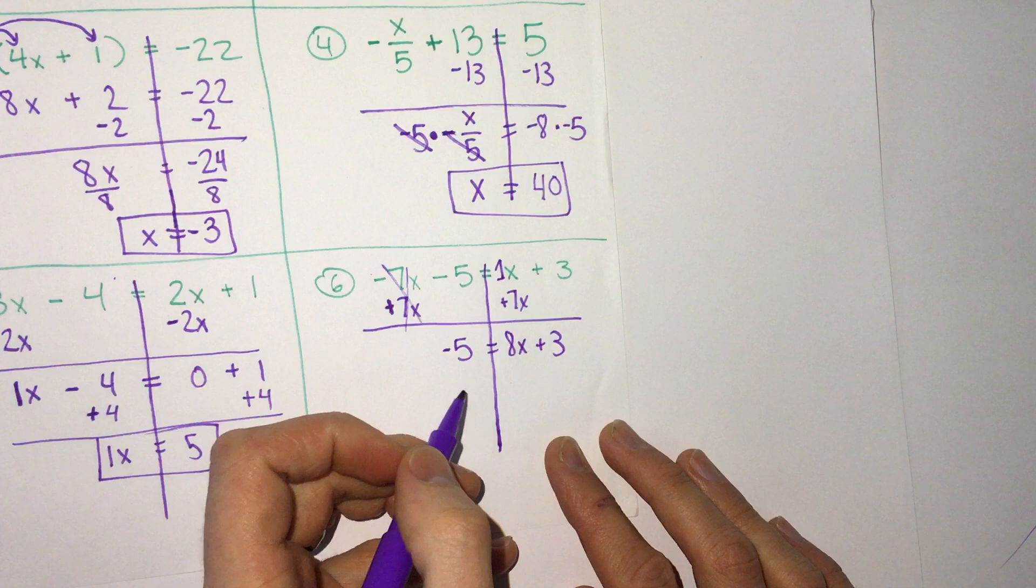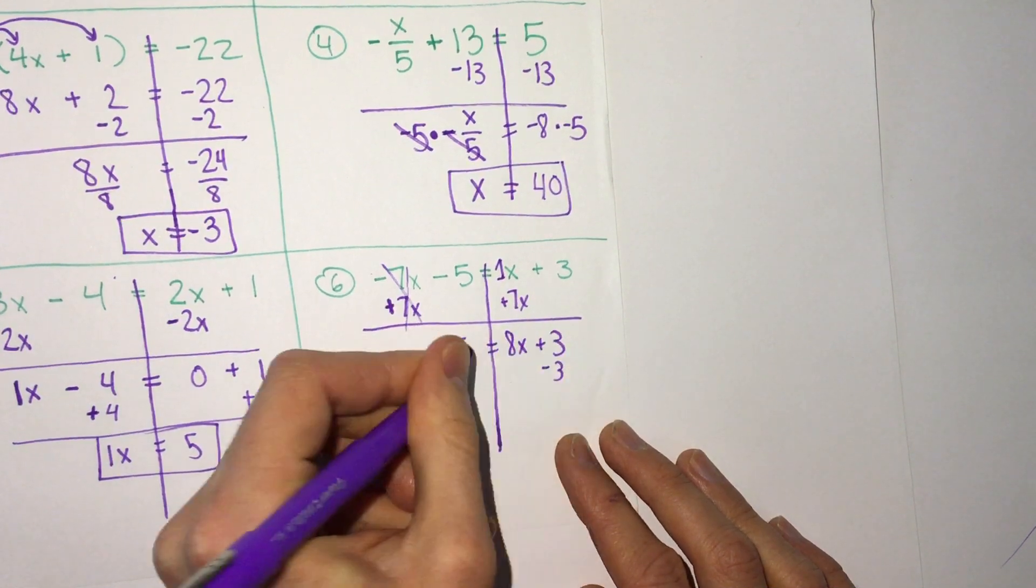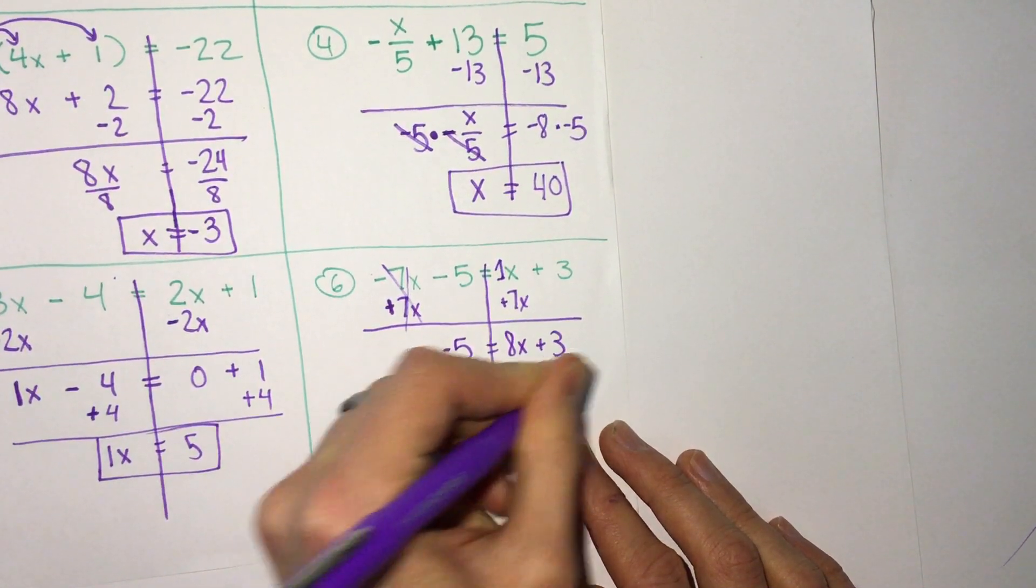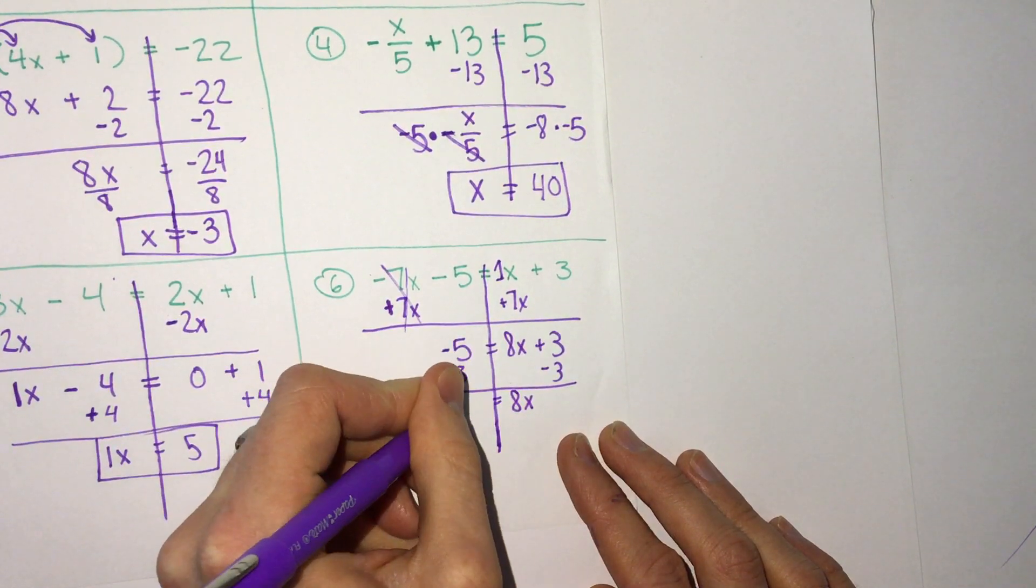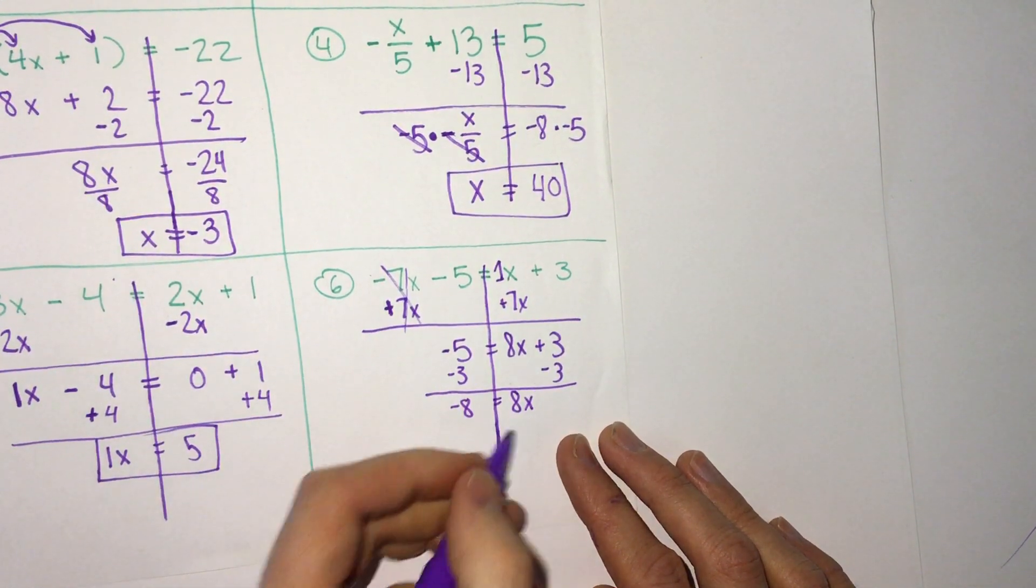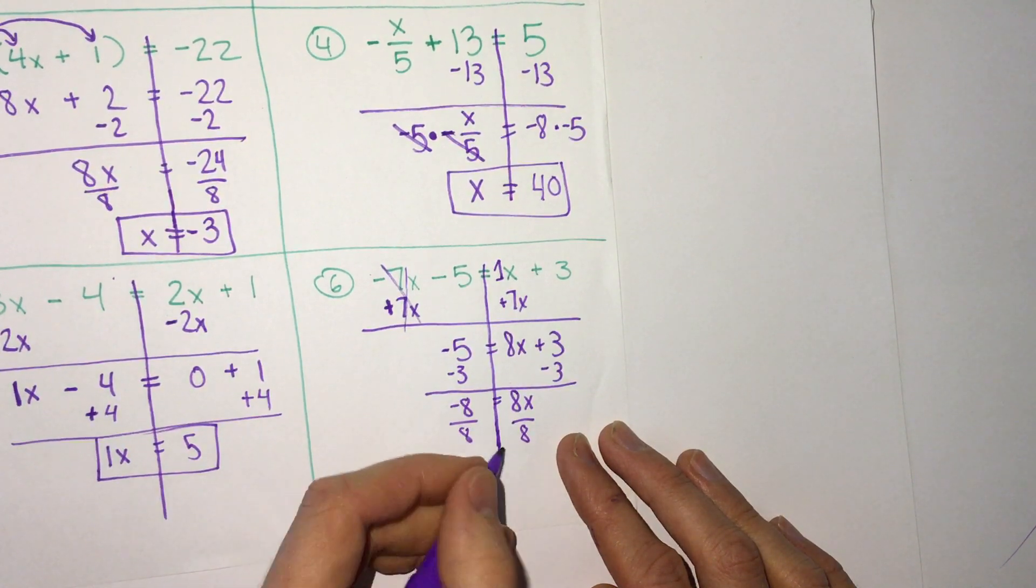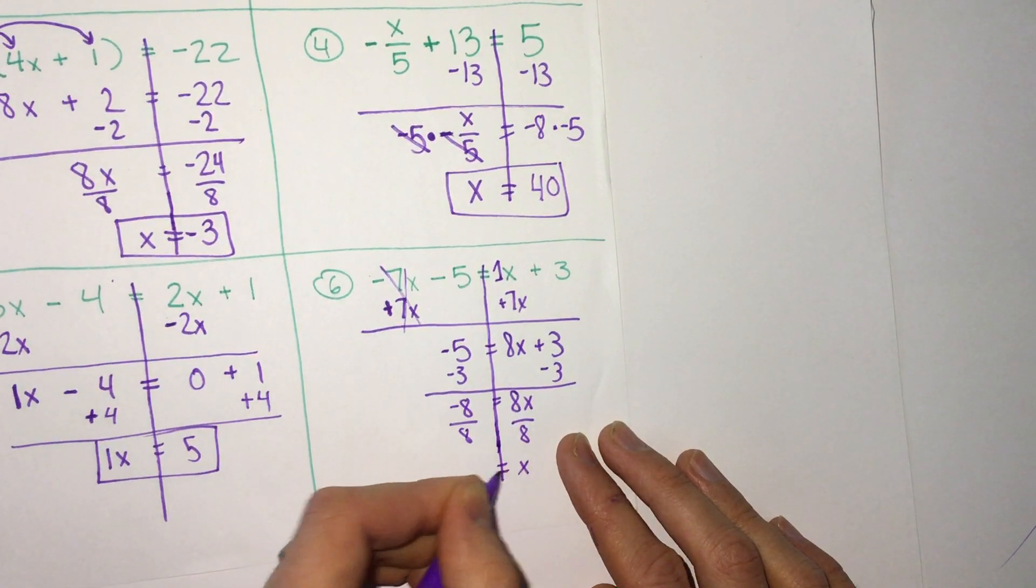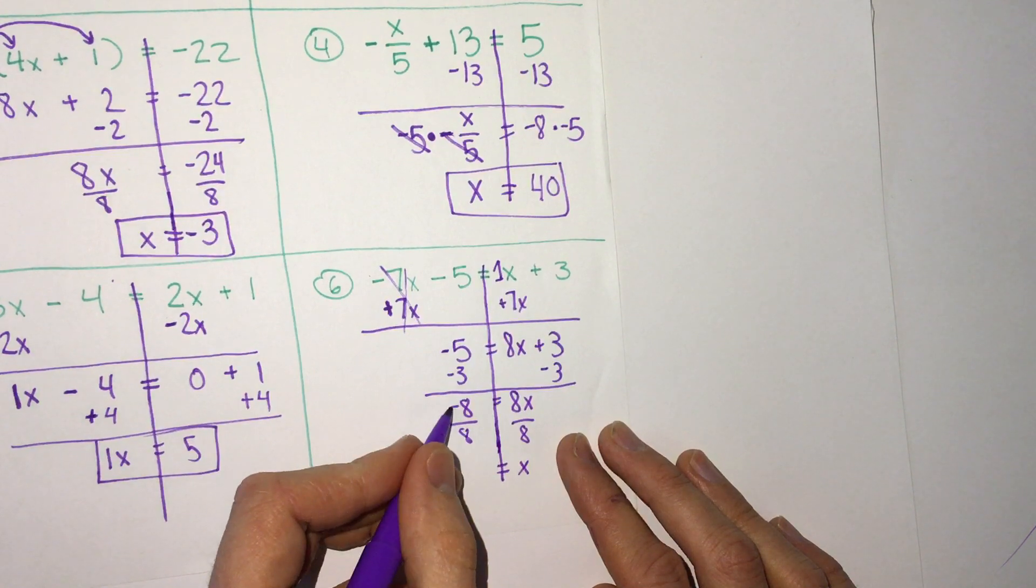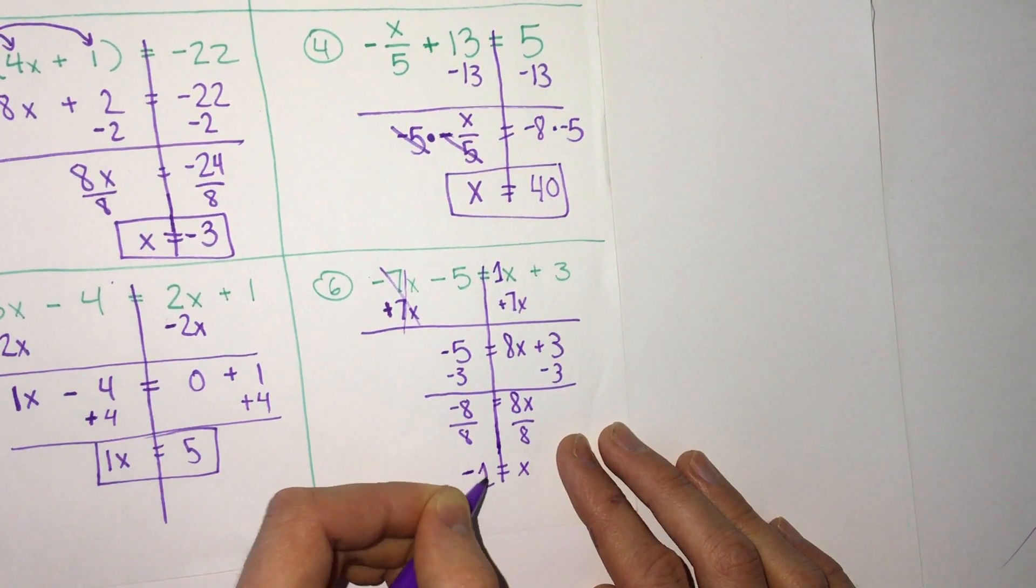We still have some addition. Minus 3. We have 8x equals negative 8. Now we can move to the multiplication and division. Divide by 8 on both sides. We get x equals 8 divided by 8 is 1. The negative makes it negative 1.